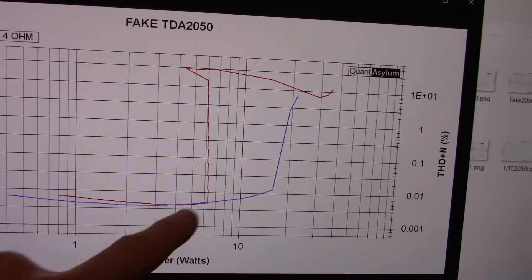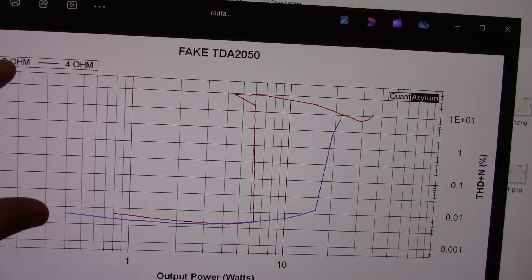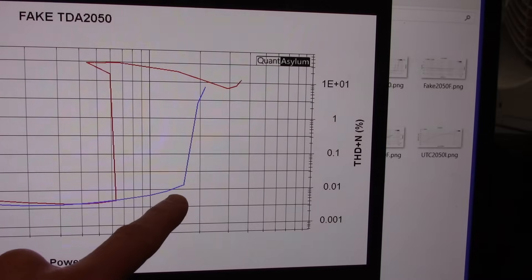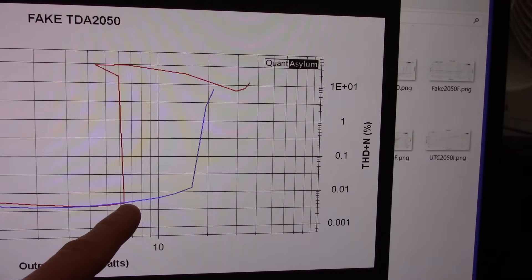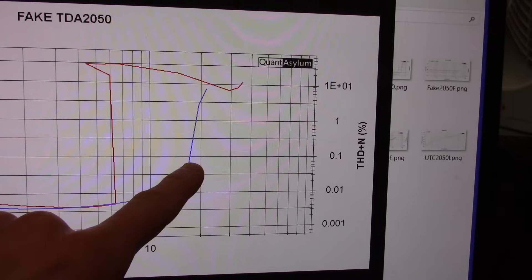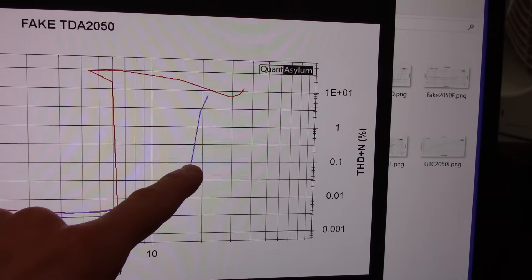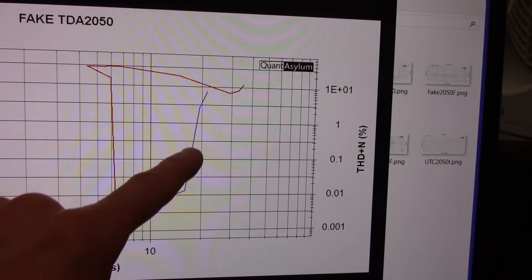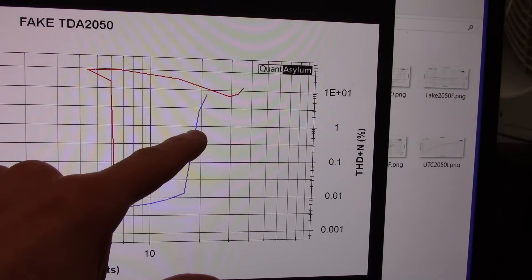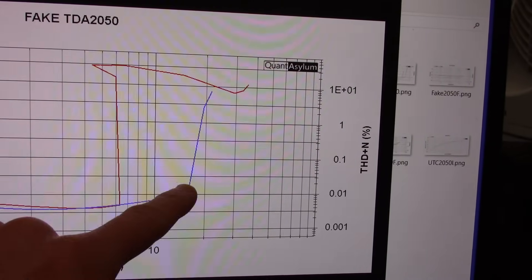But here's where it gets weird. Well, first the blue line, which is the 8 ohm load, and it seems fairly normal. We hit clipping here and then we go above 0.1 at what looks to be around 17 watts or so. And we go above 1 around 19, 18 or 19.